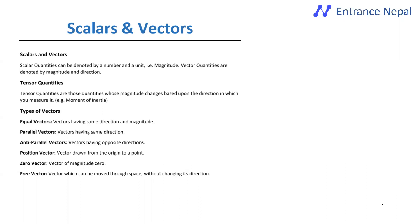The topic is vector and scalar. The first thing is the definition of the vector. The vector is a quantity that has both magnitude and direction. The current types of vectors are used in physics.